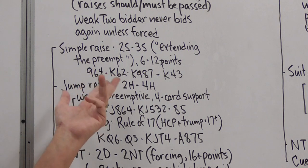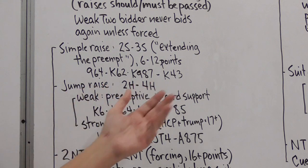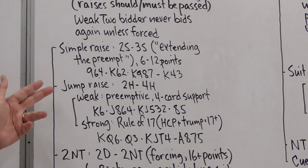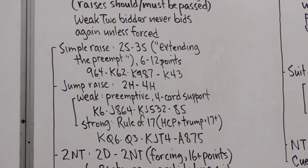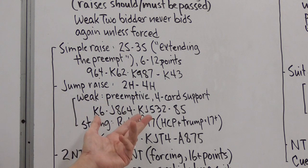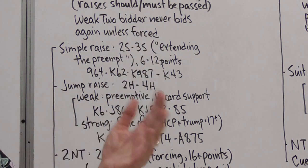Or we can make a jump raise. Suppose partner comes in and makes an opening bid of two hearts. We might bid four hearts under one of two circumstances. One is when we're weak. We're making a preemptive bid, we're promising four card support and we're not expecting to make this contract. We're basically sacrificing and using up as much space as we can. If the opponents want to come in now and bid four spades, they can try that but that might not be a good place for them and we have successfully preempted. On the other hand, there are times when we would bid up to the four level expecting to make the contract and that's when we have a strong hand and a lot of people like to use what's called the rule of seventeen.